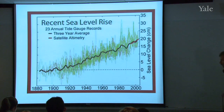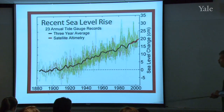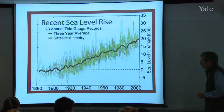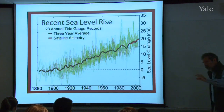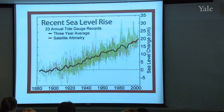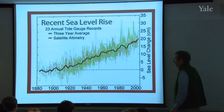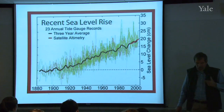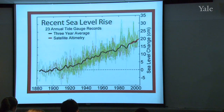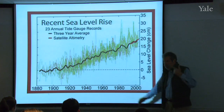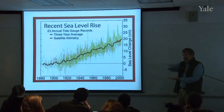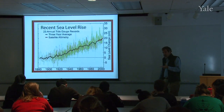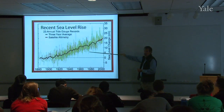Sea level has been rising over the last 100 years — not as rapidly as coming out of the last ice age, but steadily at about 3 centimeters per decade. Approximately half of this is due to melting glaciers adding water to the ocean basins, and the other half is due to thermal expansion: when you warm the ocean water it expands, raising the ocean surface. Each has contributed roughly half to the total increase.